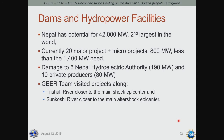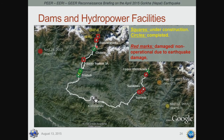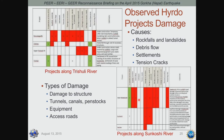Nepal has significant potential for hydropower generation. Currently there are 20 major projects generating power, though much less than what is needed. There was damage to six Nepal Electricity Authority projects and 10 private projects. The GEAR team visited projects along two rivers — GPS tracks show the routes taken, with red designating damaged or affected projects. Major causes of damage were rock falls, landslides, debris flows, settlements, and tension cracks, with damage types including structures, tunnels, canals, penstocks, equipment, and access roads.